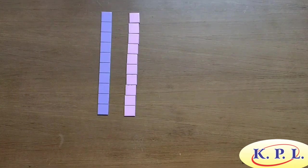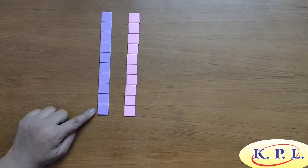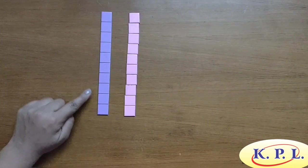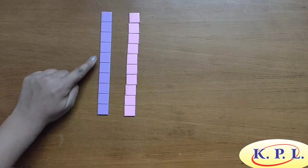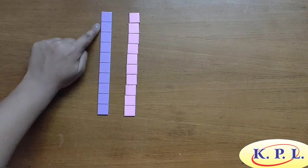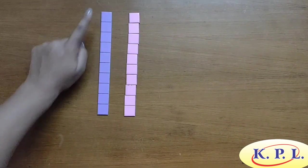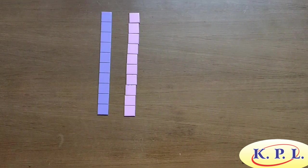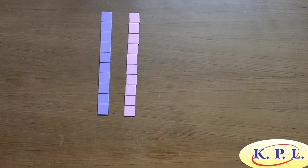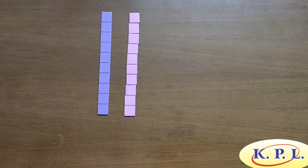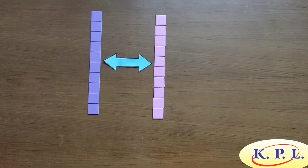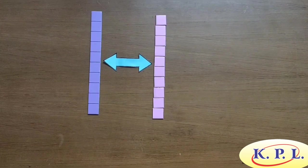Let us count and check: 1, 2, 3, 4, 5, 6, 7, 8, 9, 10. These are 10 units. Larger units are built using smaller units, or we can say that any smaller unit can be used to build larger units. Both sides of the arrow equal the same amount. They just use different units to show the same number.